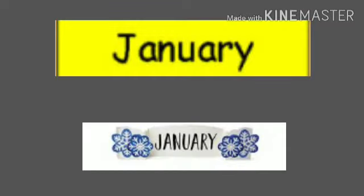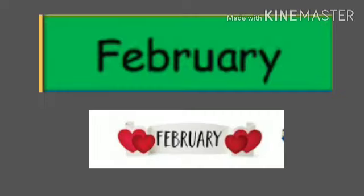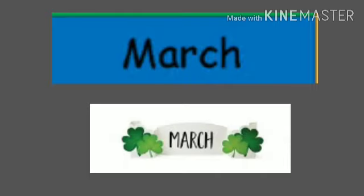The first month of the year is January — J-A-N-U-A-R-Y, January. The second month is February — F-E-B-R-U-A-R-Y, February. The third month is March — M-A-R-C-H, March.